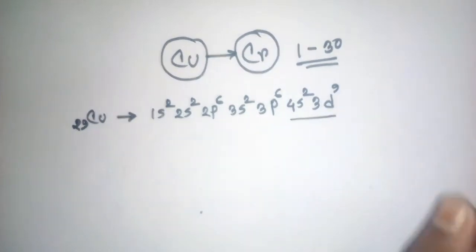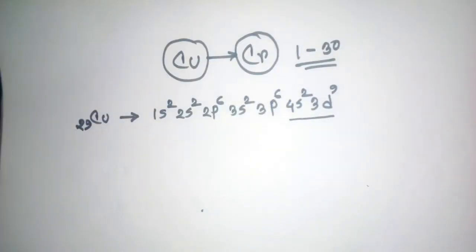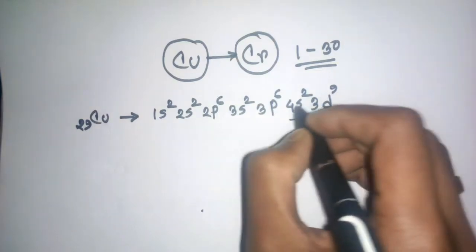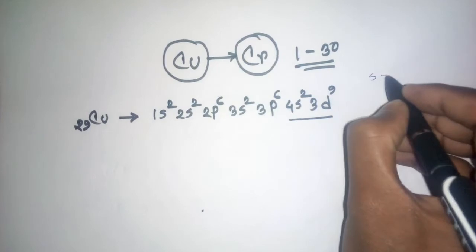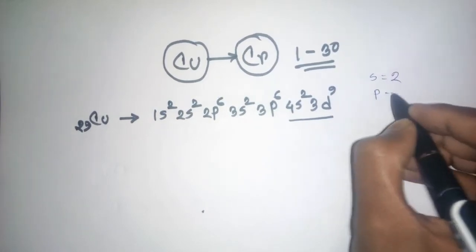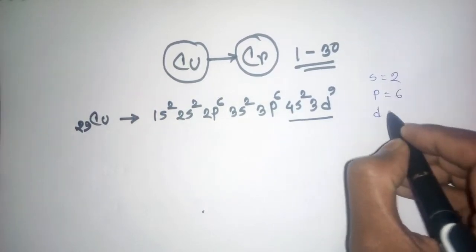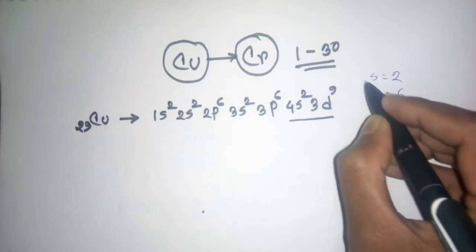I hope it's clear now. The chromium configuration - in multi-electron systems, there are interactions. Most of the electrons are on the orbital.